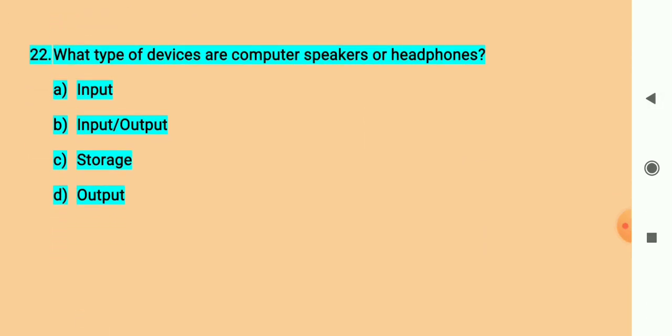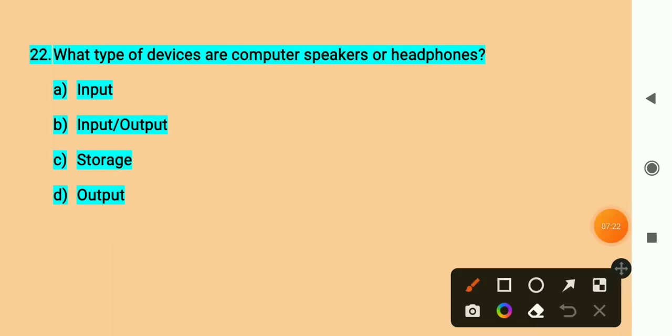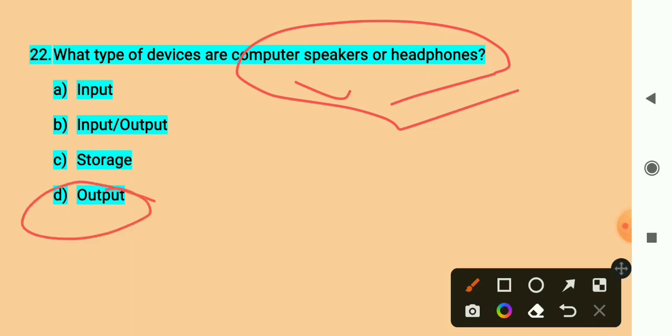What type of devices are computer speakers or headphones? Speakers and headphones - what kind of devices are they? Input? Output? Both? Storage? These are output devices. Speakers and headphones are output devices.